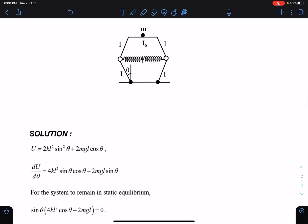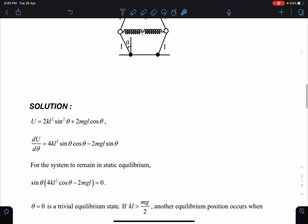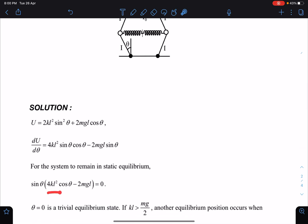So you can say one possible solution for this is theta equal to 0. Theta equal to 0 means these legs are straight, completely vertical initial situation. And another condition I get as 4kl² cos θ minus 2mg l, so I am getting from here, cos θ I'll be getting as mg/2kl. That is one angle. Another angle is theta equal to 0. Now let's check theta equal to 0.